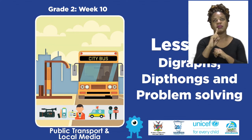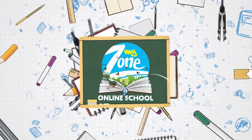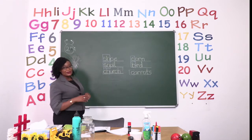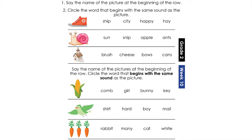For today's lesson we are going to be doing digraphs and diphthongs with some problem solving. For our first exercise today, boys and girls, let's turn to page 25. On page 25 we are going to be doing some digraphs. Digraphs are very fun to do — it is when we blend two letters to make one sound. The pictures you can see all have digraphs in them. We are going to say the name of the picture at the beginning of the row, and then circle the word that begins with the same sound as the picture.